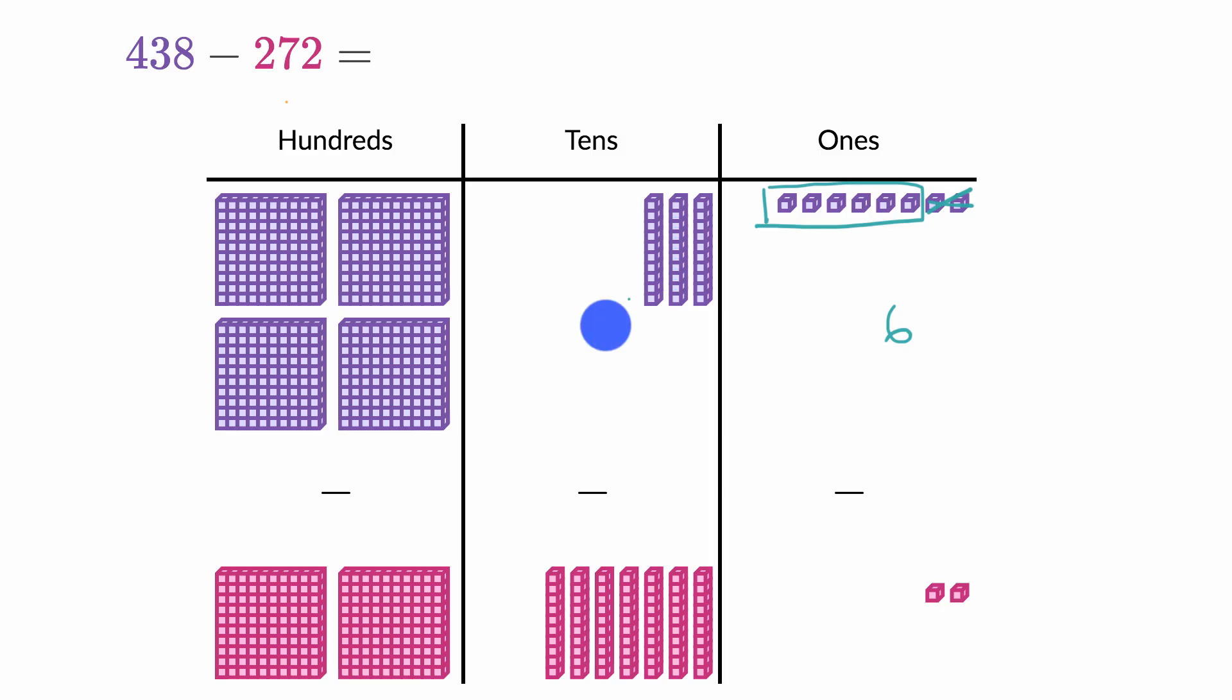Now let's go to the 10s place. Now the 10s place is interesting. We have three 10s here, and we're trying to take away from that one, two, three, four, five, six, seven 10s. So how do you take seven 10s from three 10s?